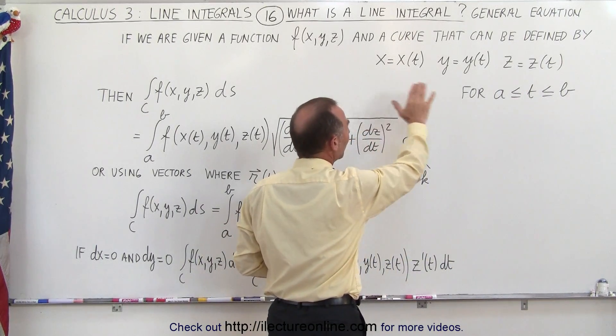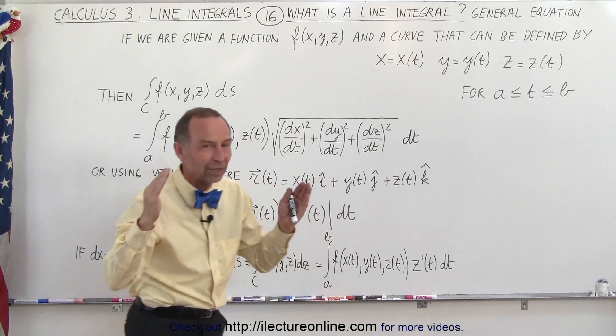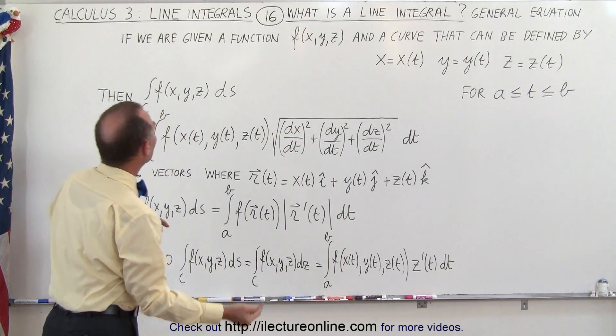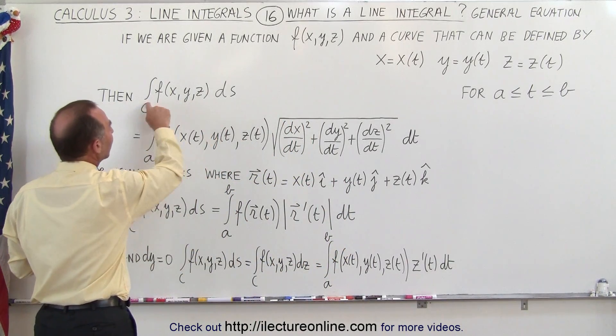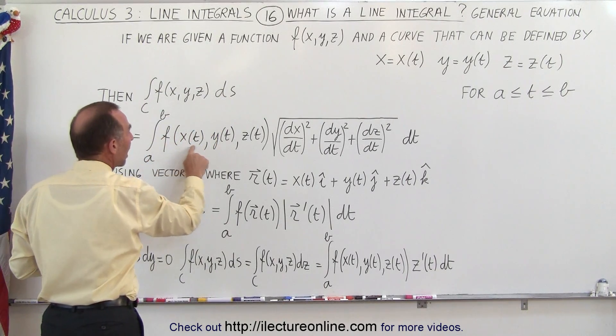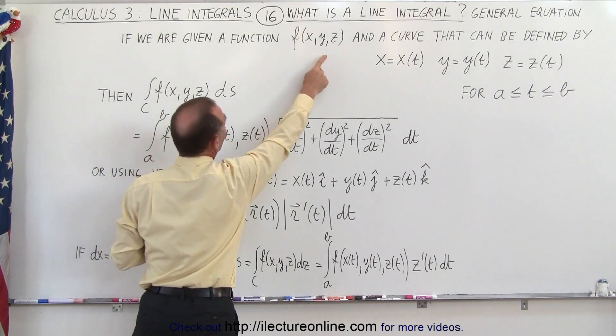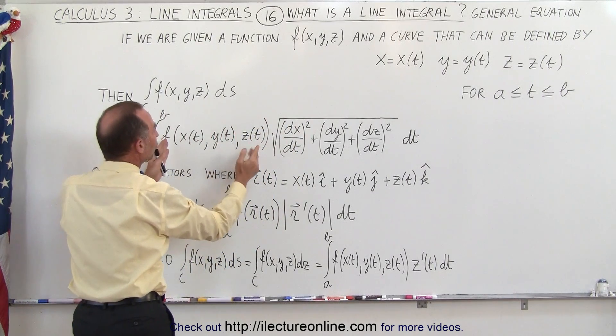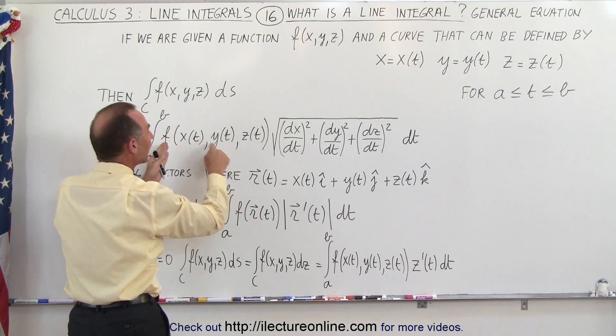So if we can express x, y, and z in terms of t and then know what the limits of t are, then we can take our line integral and convert it to a function which now, instead of writing a function of x, y, and z, we write the same function but now in terms of t.